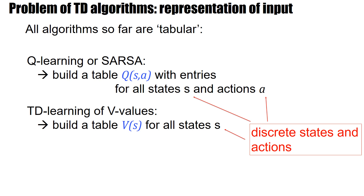So far, all the algorithms we have considered are tabular — we build tables. For example, in SARSA or Q-learning, we build a table Q(s, a) for all states s and actions, for all state-action pairs, with discrete states and actions. For TD learning of V values, we similarly build a table V(s) for all discrete states.